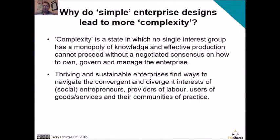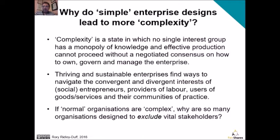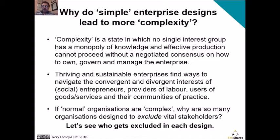So in Ralph Stacey's complexity theory, we can see there's a tendency to try and solve problems in a wholly unrealistic way by assuming everything can be dragged into the zone of order. Any enterprise that doesn't design itself to address complexity actually makes life more difficult for itself. Sometimes you need to involve multiple stakeholders, sometimes you need to exercise judgment, but most of the time you need to adapt and deal with complexity and chaos. So if organisations are complex, why are so many designed as if they are not, by excluding the very stakeholders they need?